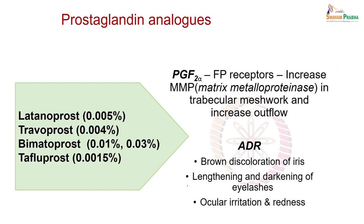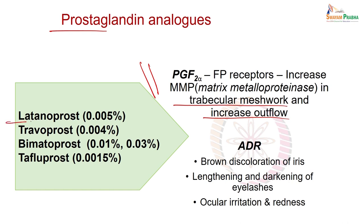These days, prostaglandin analogues are increasingly used. Prostaglandin PGF2 acts on FP receptors and increases matrix metalloproteinase enzyme in the trabecular meshwork, causing an increase in outflow. The drugs in this category of prostaglandin analogues are latanoprost, travoprost, bimatoprost, and tafluprost, of which latanoprost is nowadays more commonly used.